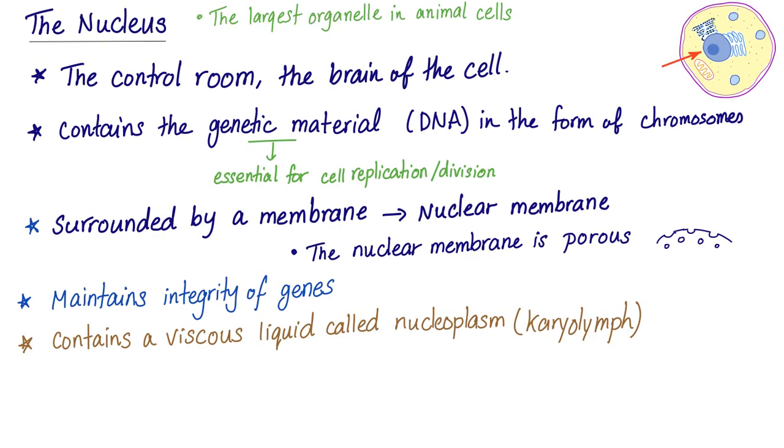The nucleus is the largest organelle in animal cells. It's the control center. It contains the genetic material in the form of DNA. DNA is packed together in the form of chromosomes. Surrounded by a membrane called a nuclear membrane, it has pores to allow passage of substances. It maintains the integrity of genes because genes are parts of DNA. They contain viscous liquid called the nucleoplasm or the karyolymph, which is the substance of the nucleus.